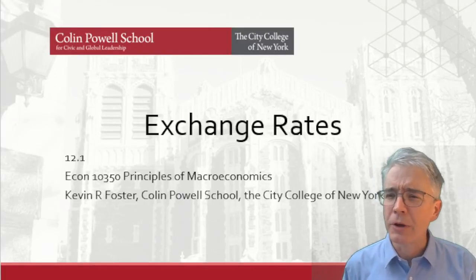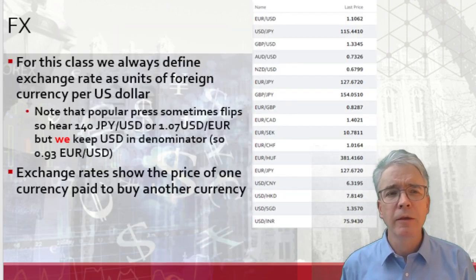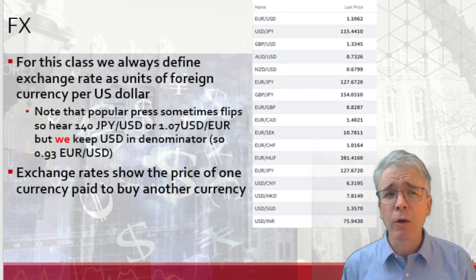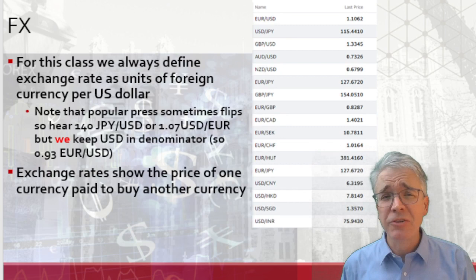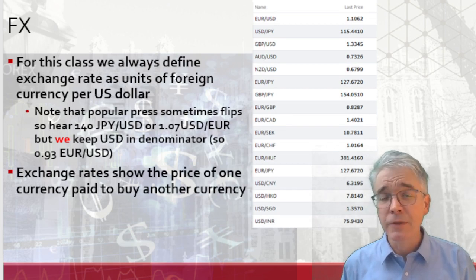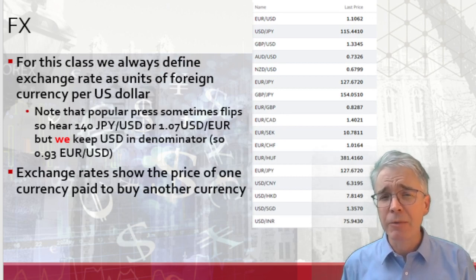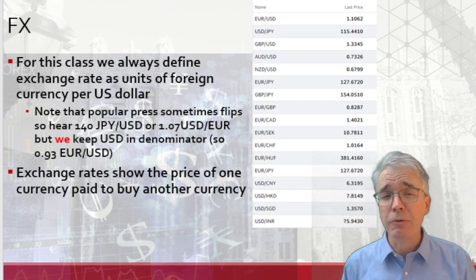We're going to talk about exchange rates — foreign exchange, sometimes abbreviated as FX. For this class we're always going to define the exchange rate as units of foreign currency per US dollar, always keeping the US dollar in the denominator. You might see 140 Japanese yen equal to one dollar, or one point zero seven dollars per euro — those flip the dollar's position. To keep things simple, instead of one point zero seven dollars per euro we'd say zero point nine three euro to the dollar.